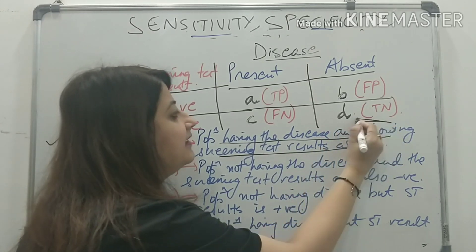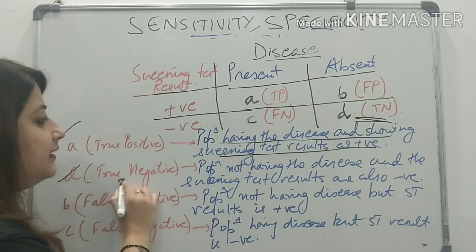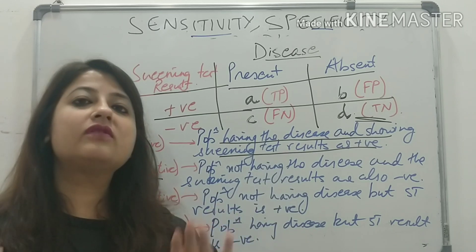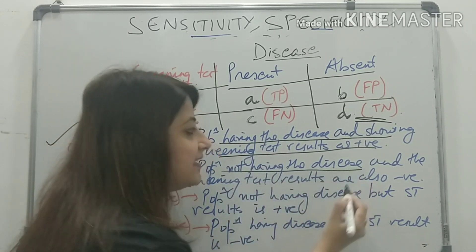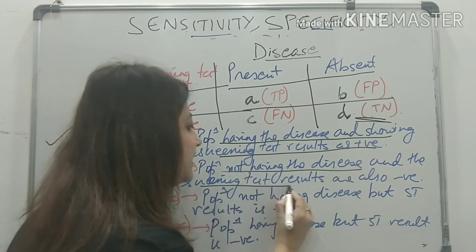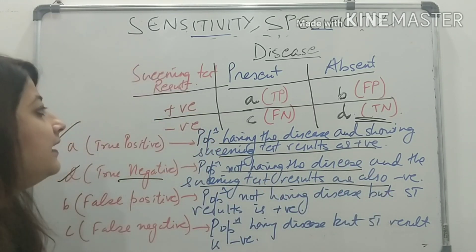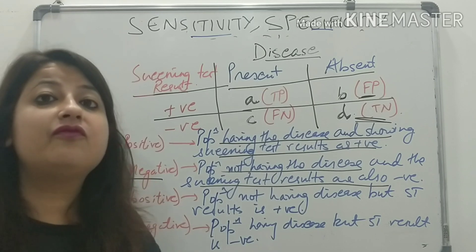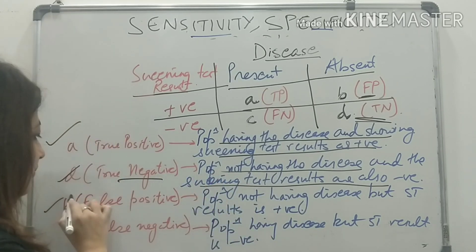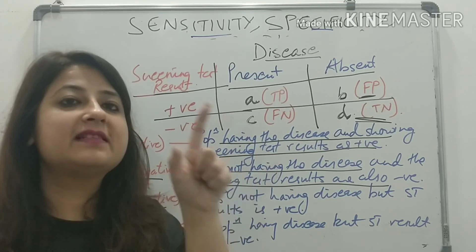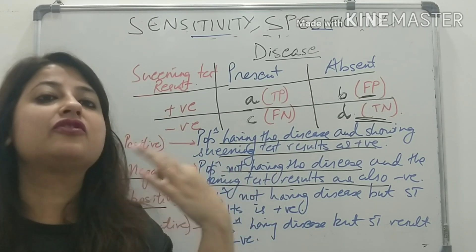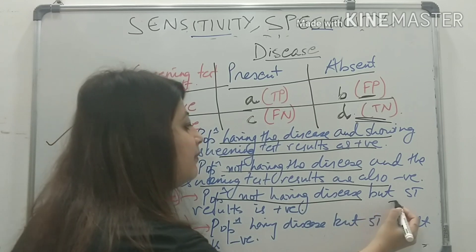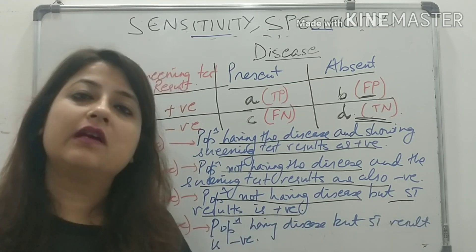Next, look at D — true negative. Very simply, the population does not have the disease and my screening test result also shows it as negative. Now look at B — false positive. False positive means the population does not have the disease but my screening test result shows that disease is present. So the population is not having the disease but the screening test result is showing it as positive.